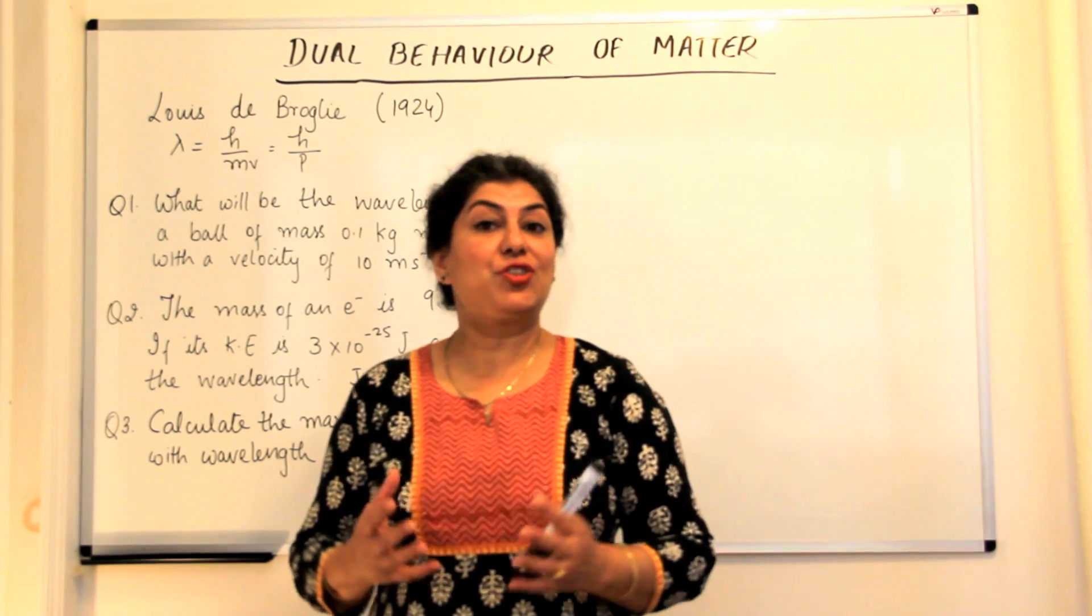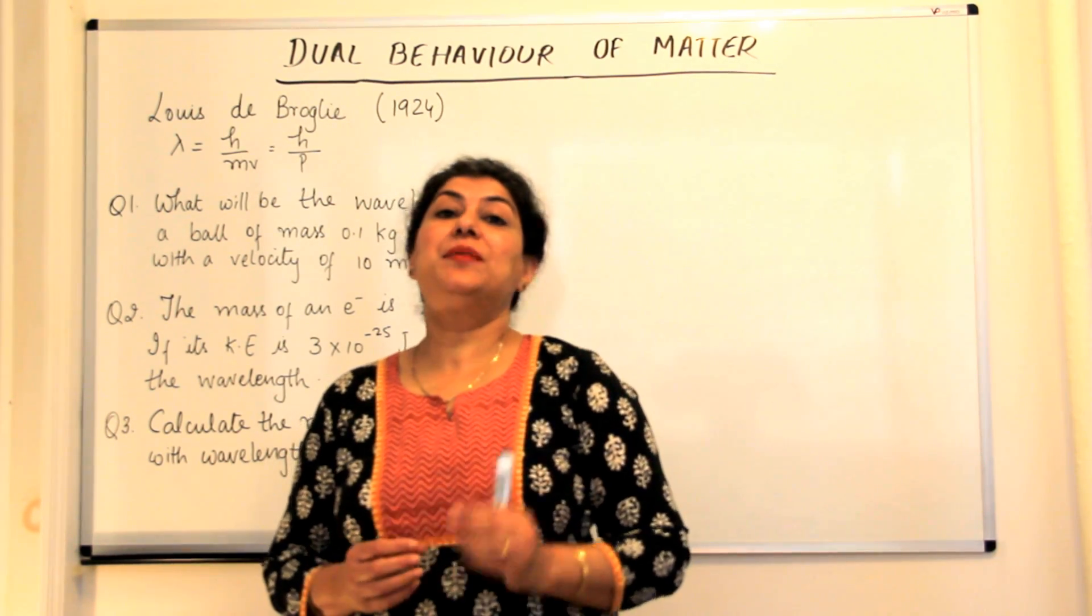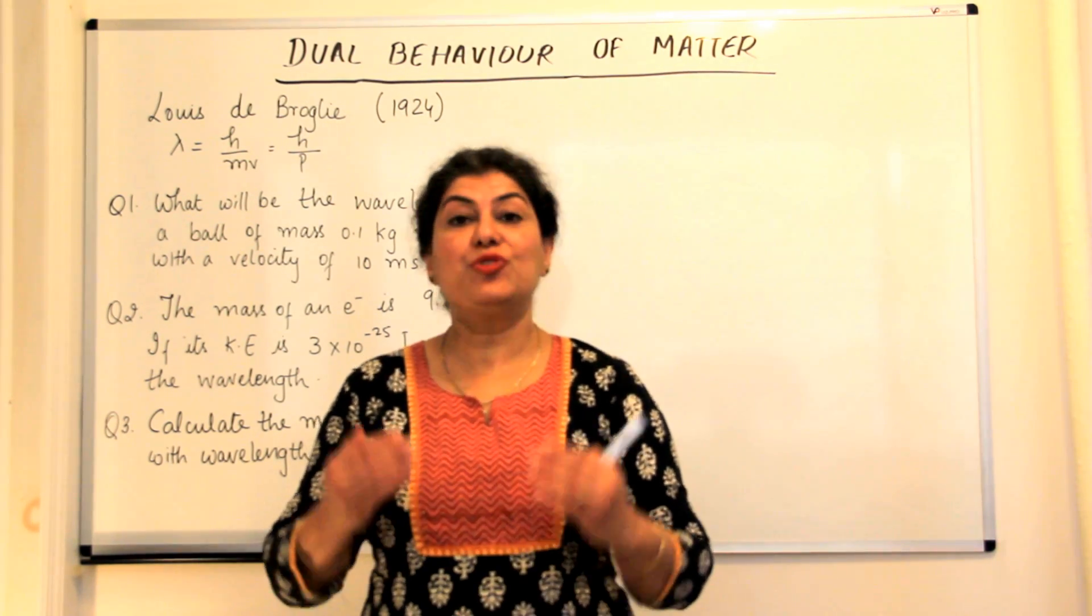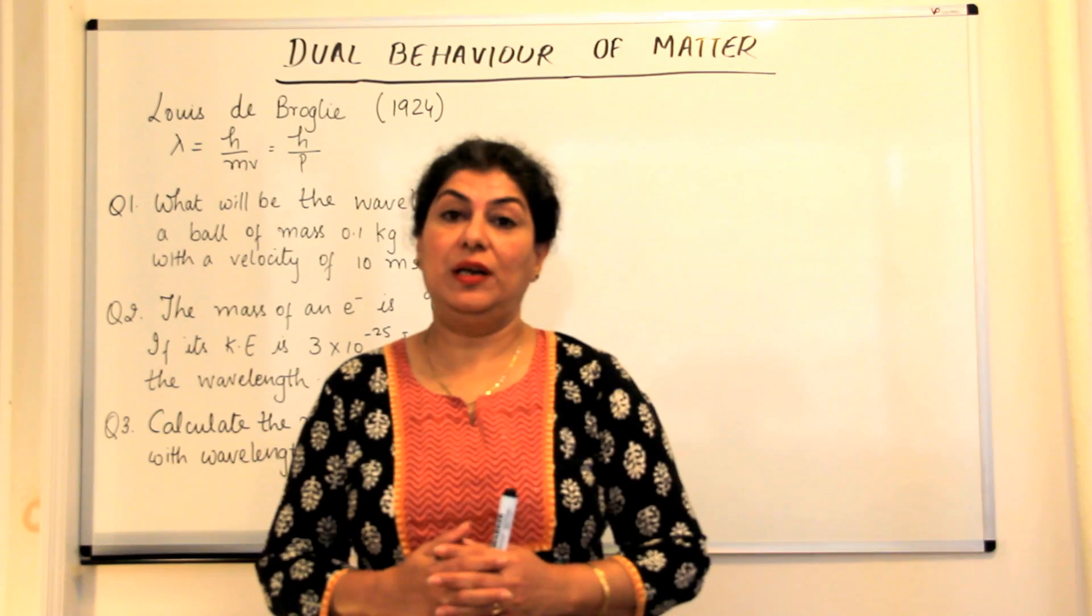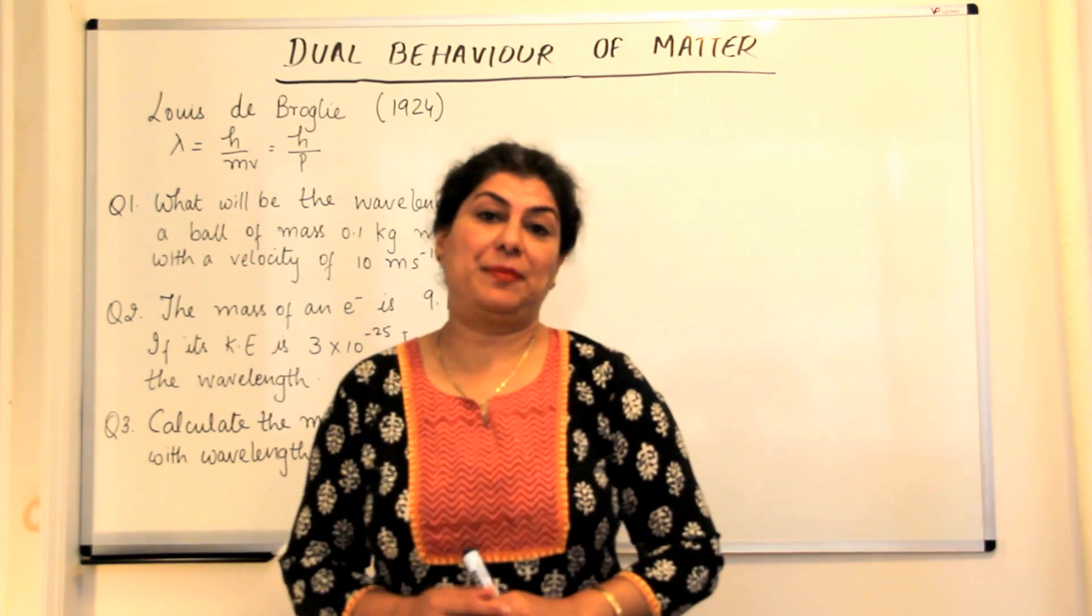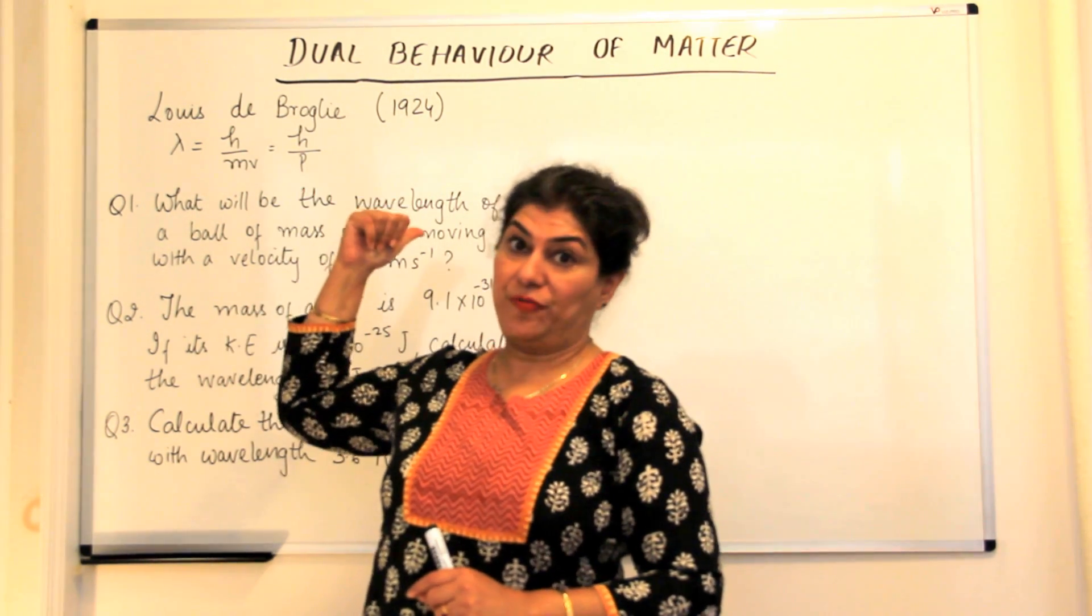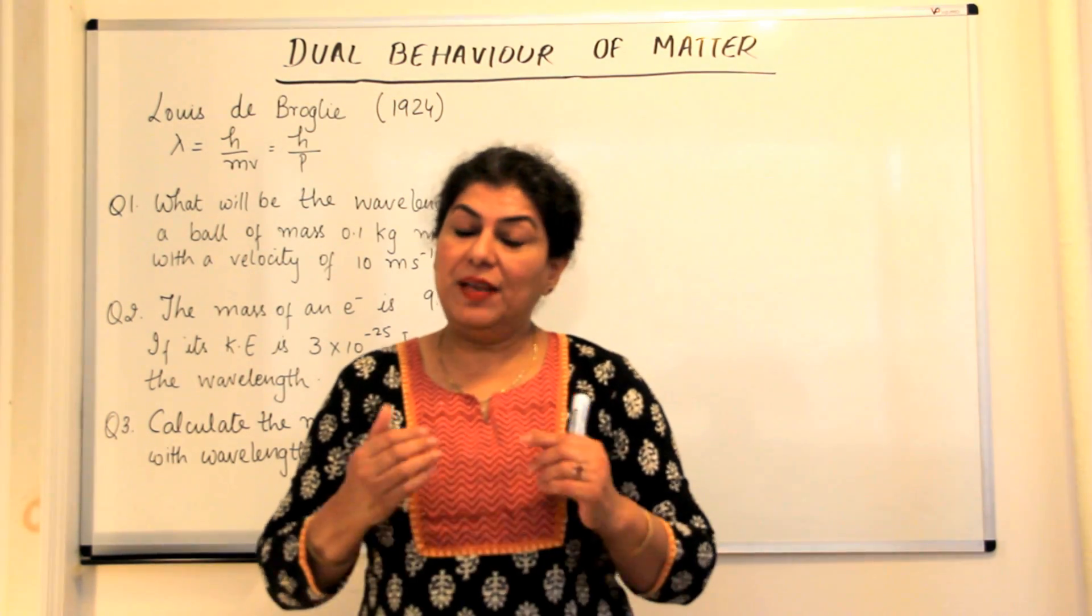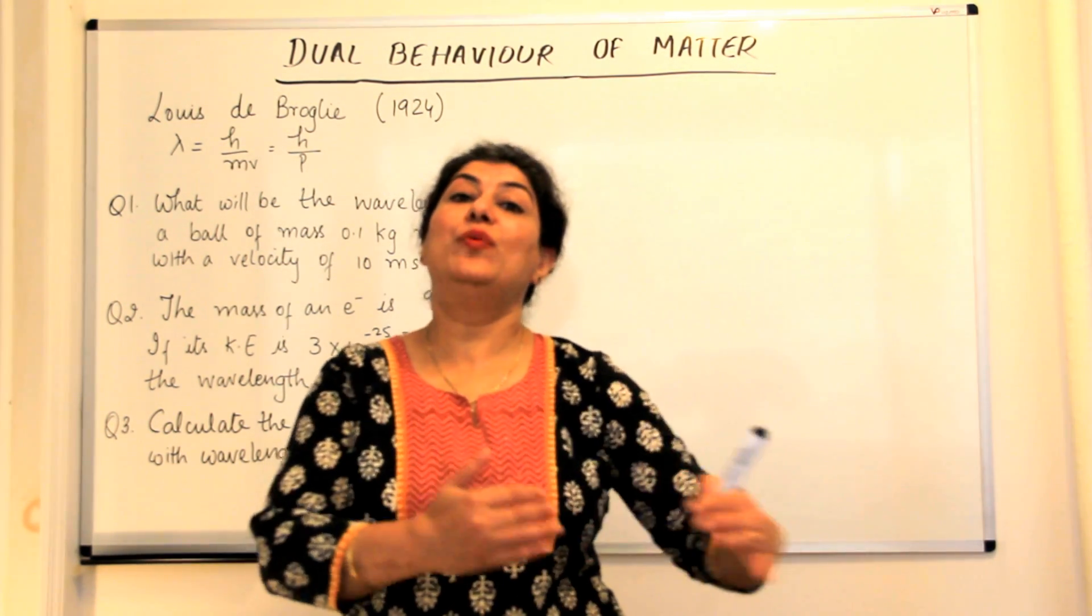We have been studying the structure of atom and we did the Bohr's model of an atom and its drawbacks, and now to move to the quantum mechanical model we need to take two more steps: the dual behavior of matter and the Heisenberg's uncertainty principle. We'll be doing this in these coming videos now.